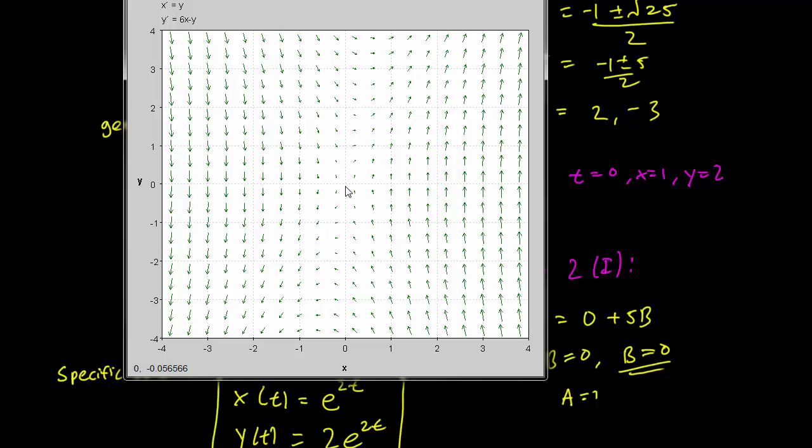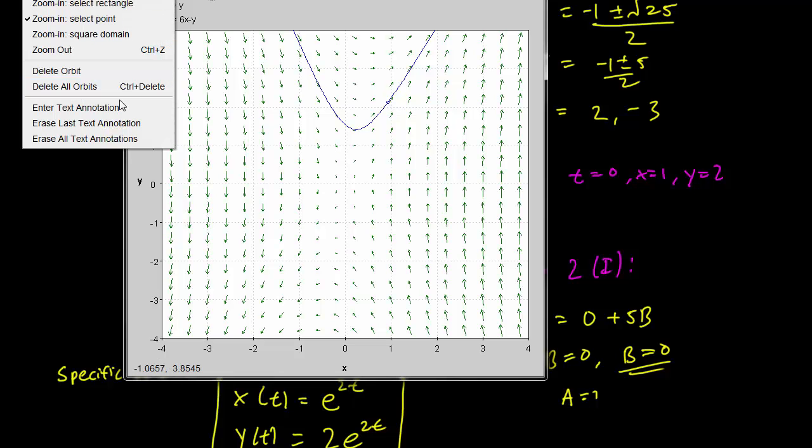So this is y. It's very interesting. x is here, 1, and y is 2. So our solution started here. Oops, okay. I meant to put it at this point, but I missed slightly. But there is a delete orbit and delete all orbits option here under the edit window. So you can delete that orbit.